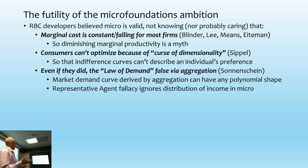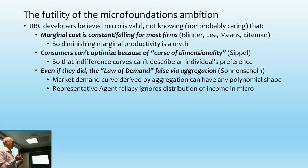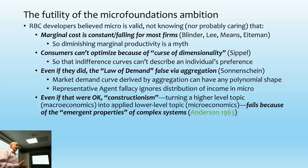They get around that by the fallacy of the representative agent. But the whole idea of the representative agent is somebody consuming a single commodity — there's no income distribution because one person is simultaneously worker and capitalist, and there are no relative prices because all commodities are the same. And then even if that were okay, the next level is constructionism: is it possible to build a higher level of analysis, like biology, from a lower level like biochemistry?